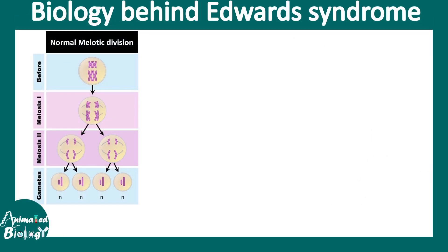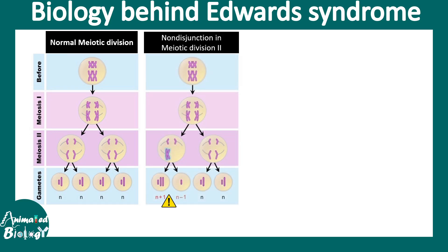Let's talk about the biology behind Edward syndrome. There is an extra chromosome 18, but why? In the normal process of meiotic division, four types of gametes are formed, each of which is haploid — having one copy of each chromosome from the mother or father. In the process of non-disjunction, the segregation is not equal, and one particular gamete might get N+1 chromosomes. Imagine this particular chromosome — which is N+1 — is specifically the 18th chromosome.